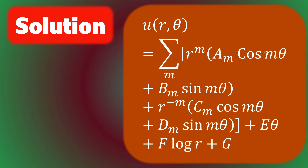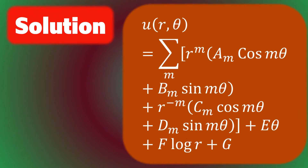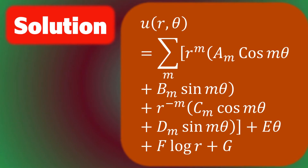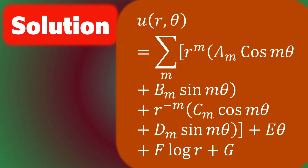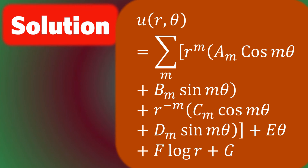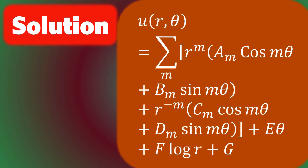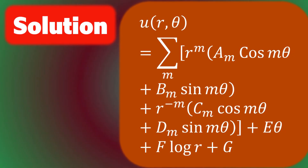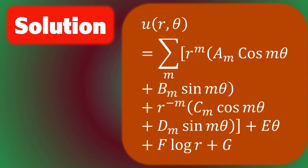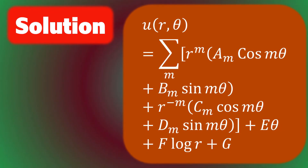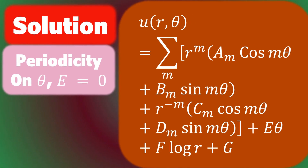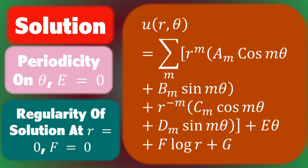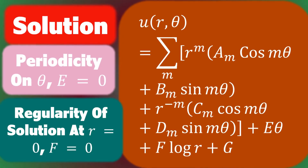Solving both equations — for the second one, try R equals r to the m — we obtain the general solution: u of r, theta equals the sum over all m of r to the m times (a sub m cos m theta plus b sub m sin m theta), plus e theta plus f log r plus g, where a sub m, b sub m, e, f, g are constants and m is an integer. Because of the periodicity of theta we should usually ask that e equals zero. Also, for regularity of the solution at r equals zero, we impose f equals zero.